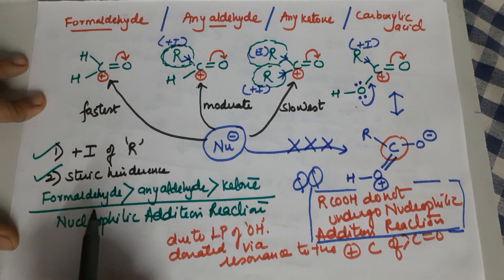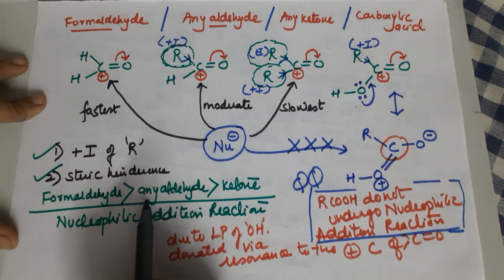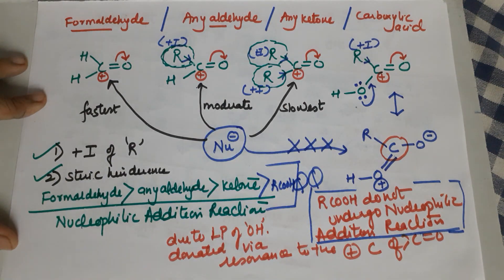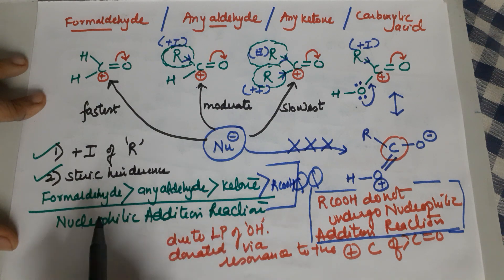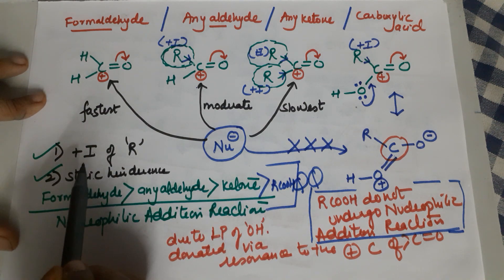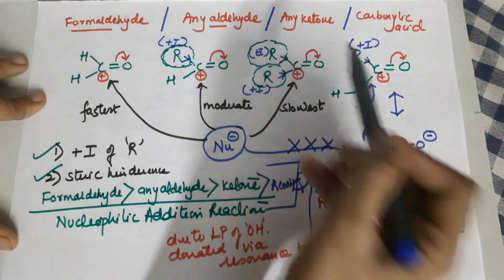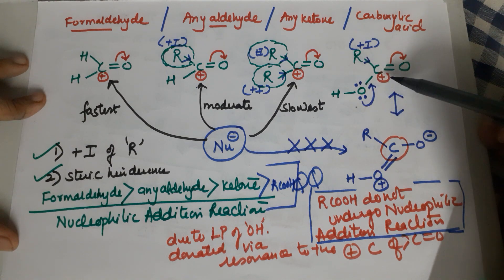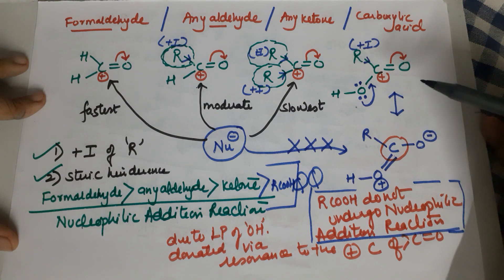To summarize: in nucleophilic addition reactions, the most reactive compound is formaldehyde, followed by any aldehyde with an R group, then ketones, and the least reactive is carboxylic acid. The key reasons for aldehydes and ketones are the inductive effect and steric hindrance. For carboxylic acid, the key reason is that the lone pair of the OH is donated to the positively charged carbon by resonance — and resonance effect is much more predominant. I hope you have understood the concept.